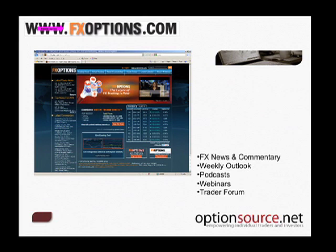Another question: are there weeklies or monthlies only? At this point, we're looking at monthly expiring option contracts. I'm not sure what the ISE has in the works — they're always coming up with fantastic new products to trade. That would be a question you might want to pose to the folks at the exchange. But as it stands right now, we're looking at just a monthly expiring option contract.